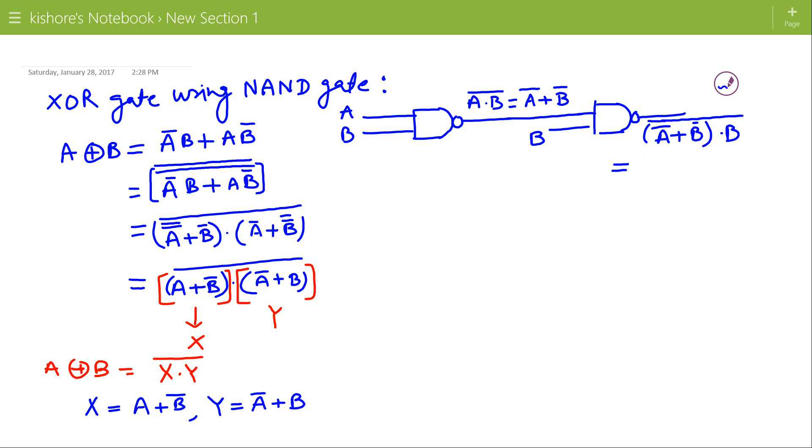So this is A bar B plus B into B bar is 0 and the complement. So A bar B plus 0 is A bar B and the complement of A bar B is A plus B bar. So this is X. So X can be realized with 2 NAND gates.